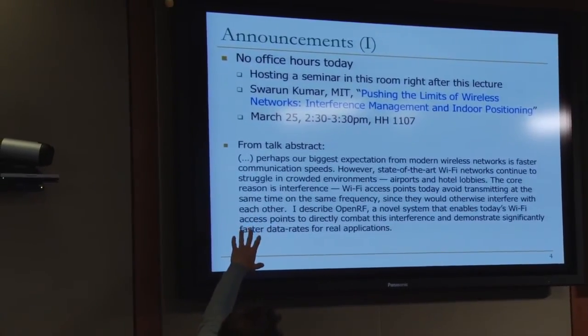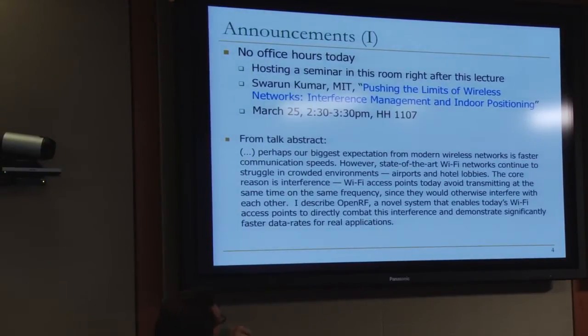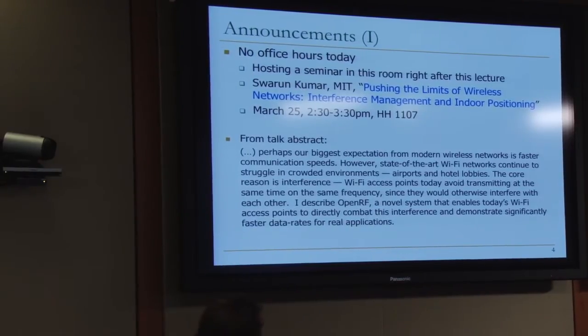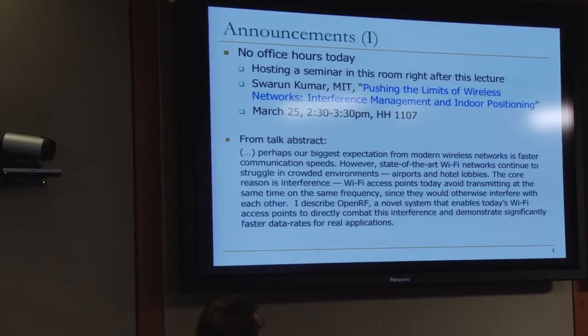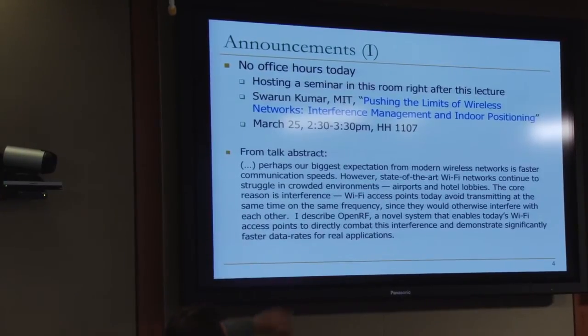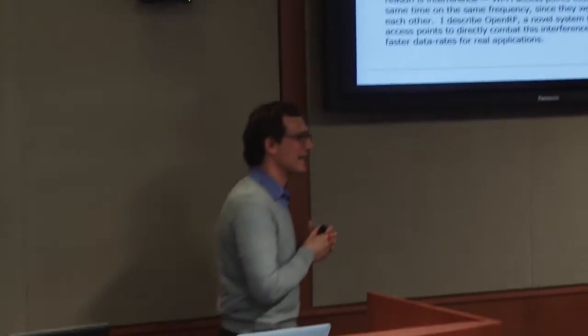Basically, the abstract says: 'Perhaps our biggest expectation from modern wireless networks is faster communication speeds. However, state-of-the-art Wi-Fi networks continue to struggle in crowded environments.' I'm sure you've all observed that. The core reason is interference. Wi-Fi access points today avoid transmitting at the same time on the same frequency, since they would otherwise interfere with each other. He talks about a system he developed to reduce that interference. I see a lot of similarities. In memory, cores whenever they're accessing memory interfere with each other because they're a shared medium — similar here. You need to manage that interference to actually get good performance in memory, same as in wireless networks.